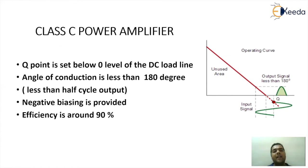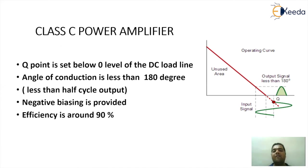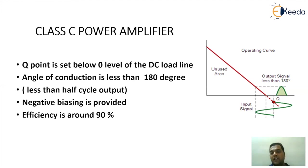For Class C power amplifier, the Q-point is placed below the cutoff region using negative biasing. Because of this, the angle of conduction will be less than 180 degrees, meaning it conducts for less than half a cycle. However, the advantage is that system efficiency goes up to around 90 percent. Comparing all categories of power amplifiers, Class C is rated as one of the best power amplifier circuits because it gives the highest efficiency of around 90 percent.